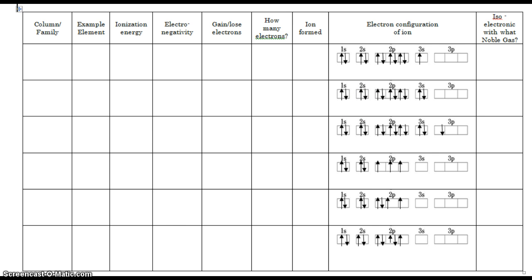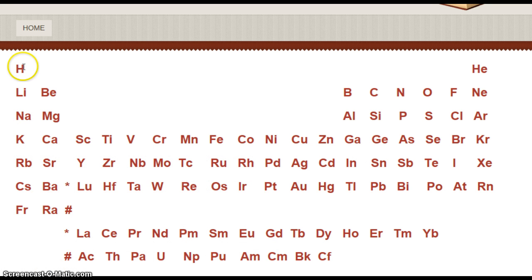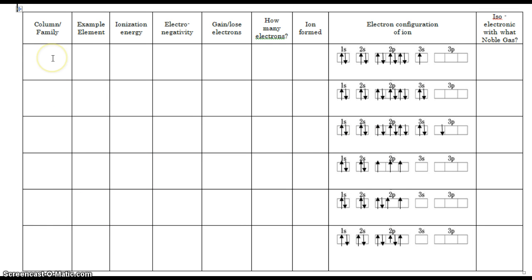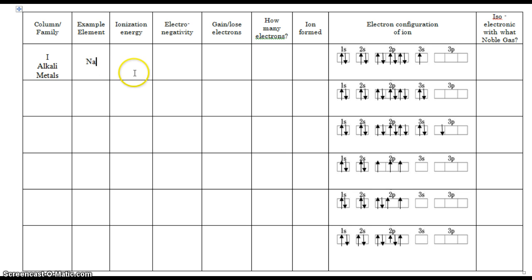We're going to start with the first column on the periodic table. We're going to specifically talk about sodium, although it will be general for all the other elements of column one. Column one of the periodic table is also known as the alkaline metals, and we're going to use sodium as our example.